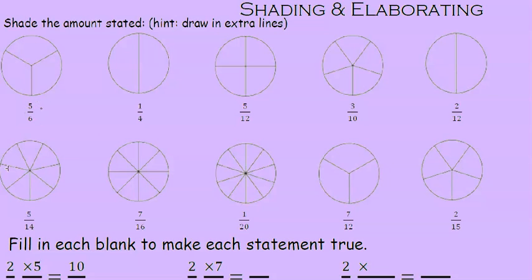If we look at the first one, we have five-sixths. We only have three pieces though, so we're going to have to draw some more in. If we draw one line between each of those pieces there, we now have six slices. We're going to shade in five of those. One, two, three, four, five.